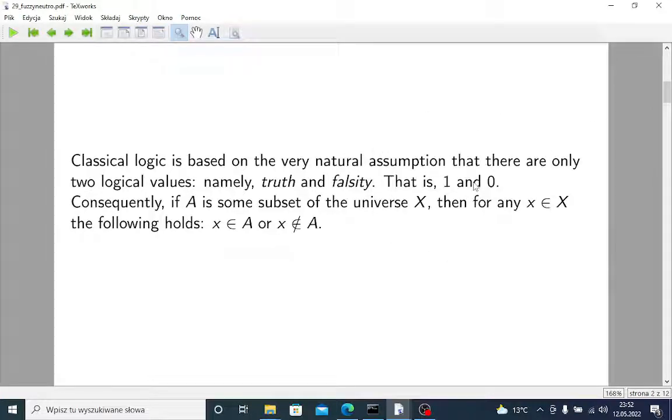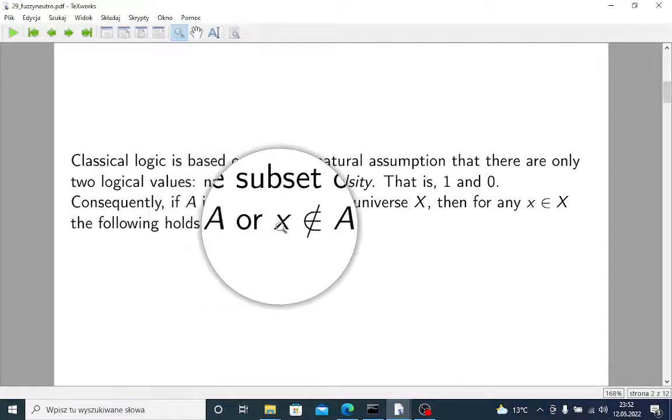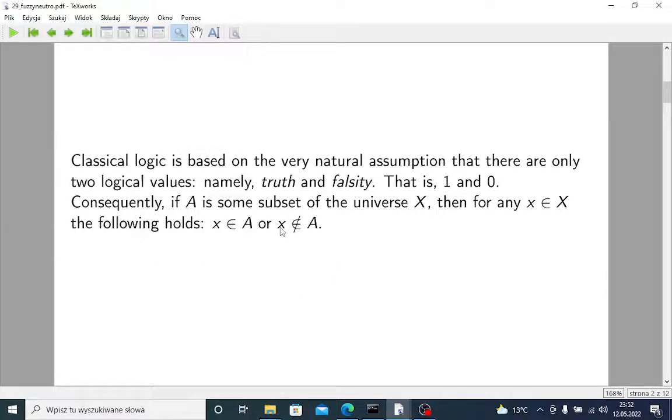So this is binary, law of excluded middle. Consequently, if A is some subset of the universe X, then for any element of this universe the following holds: X is in A or X is not in A. The characteristic function of X with respect to A is very simple. Its values are 0 or 1, clearly.